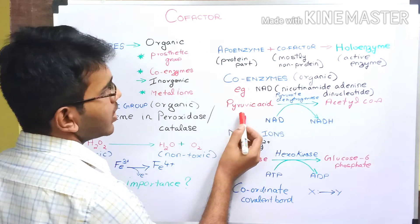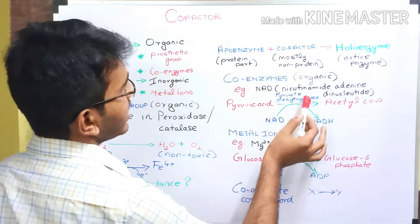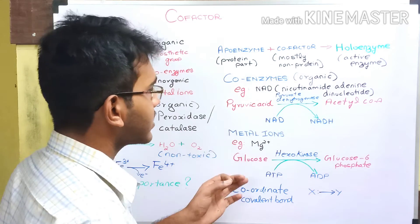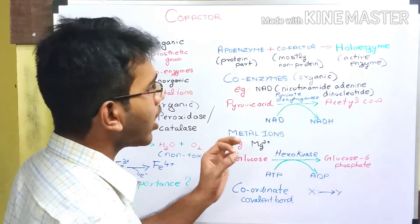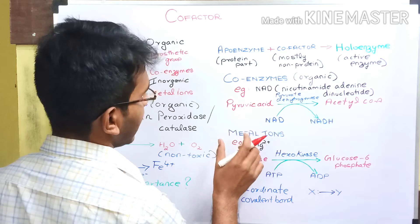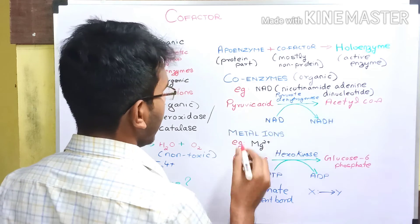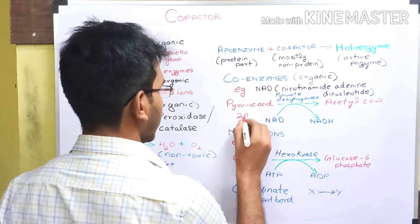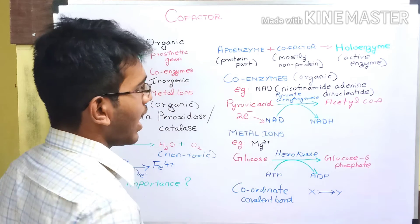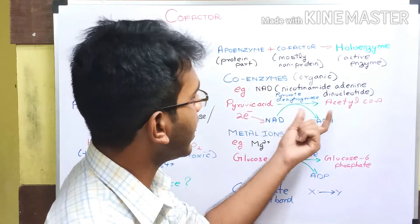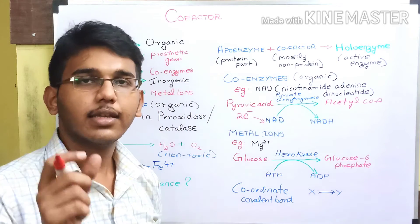In this reaction, pyruvic acid is converted to acetyl-CoA in the presence of pyruvate dehydrogenase enzyme. And this enzyme requires NAD as a coenzyme for proper functioning. When pyruvic acid is converted to acetyl-CoA, it produces 2 electrons. These 2 electrons are accepted by the NAD and it is reduced to NADH, because reduction is the gain of electrons.